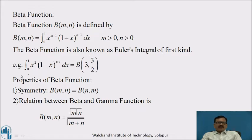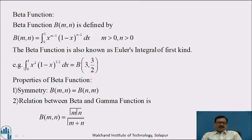For example, the integration from 0 to 1 of x squared into bracket 1 minus x raised to 1 by 2, dx. Here we can compare this integral with the definition of BETA Function. Here, M minus 1 is 2 and N minus 1 is 1 by 2. Therefore, without integrating, we can write the value of this integral as BETA of 3 and 3 by 2, that is, here M is 3 and N is 3 by 2.